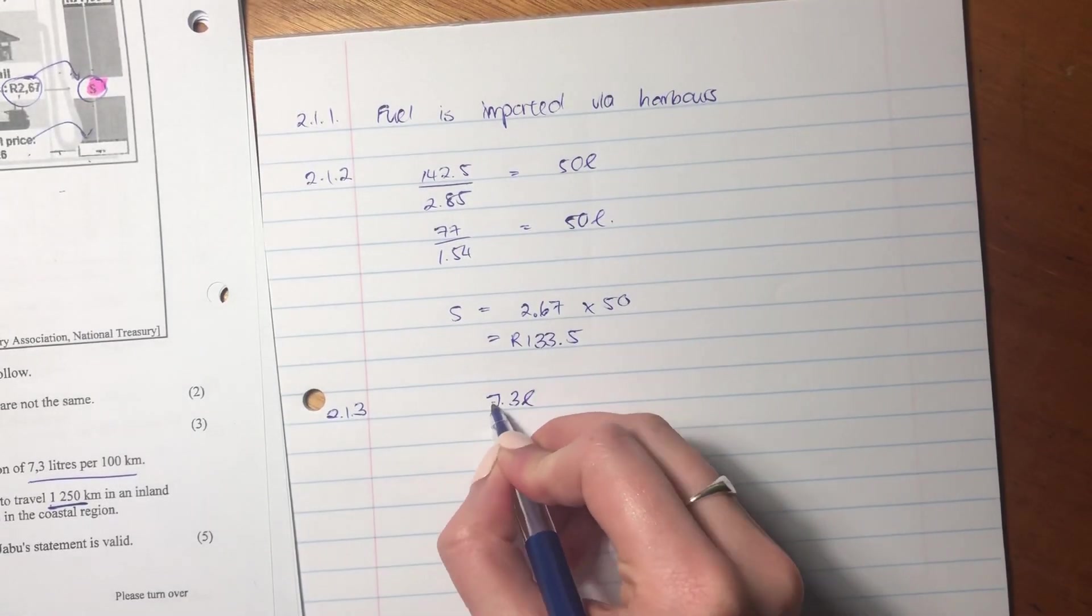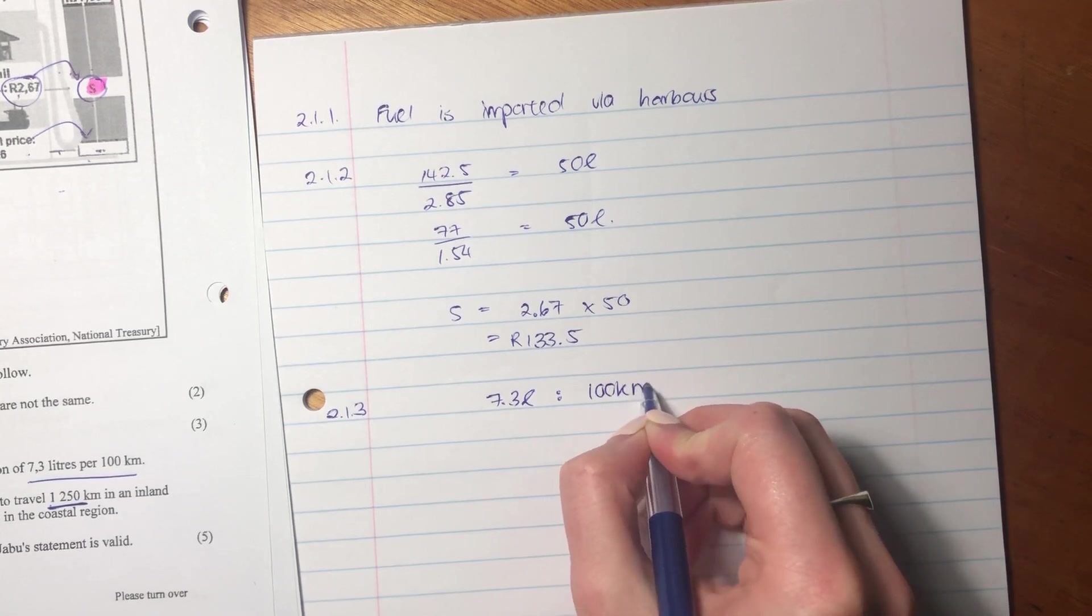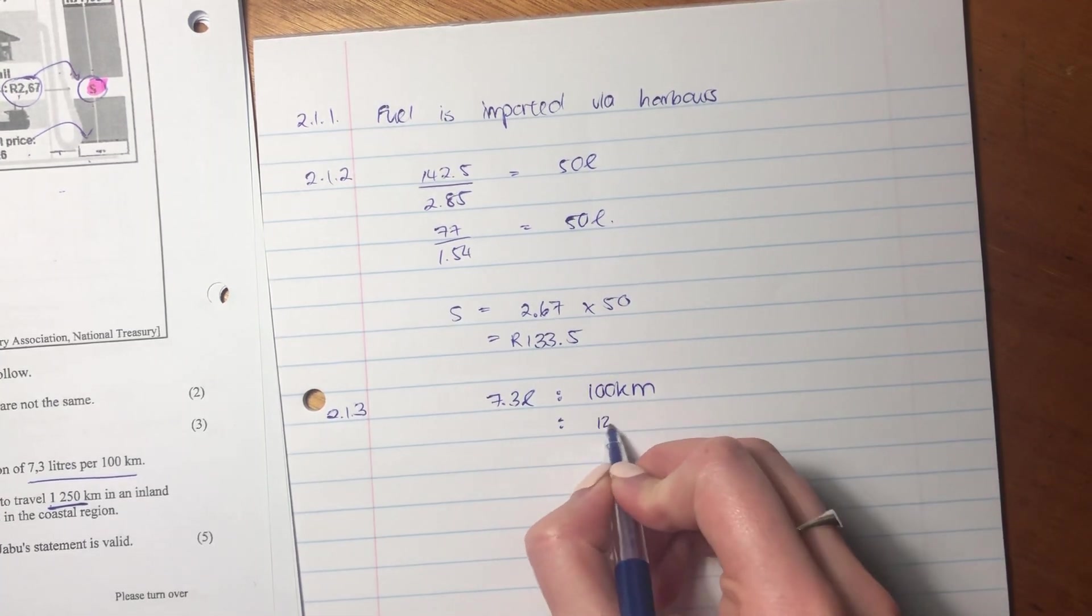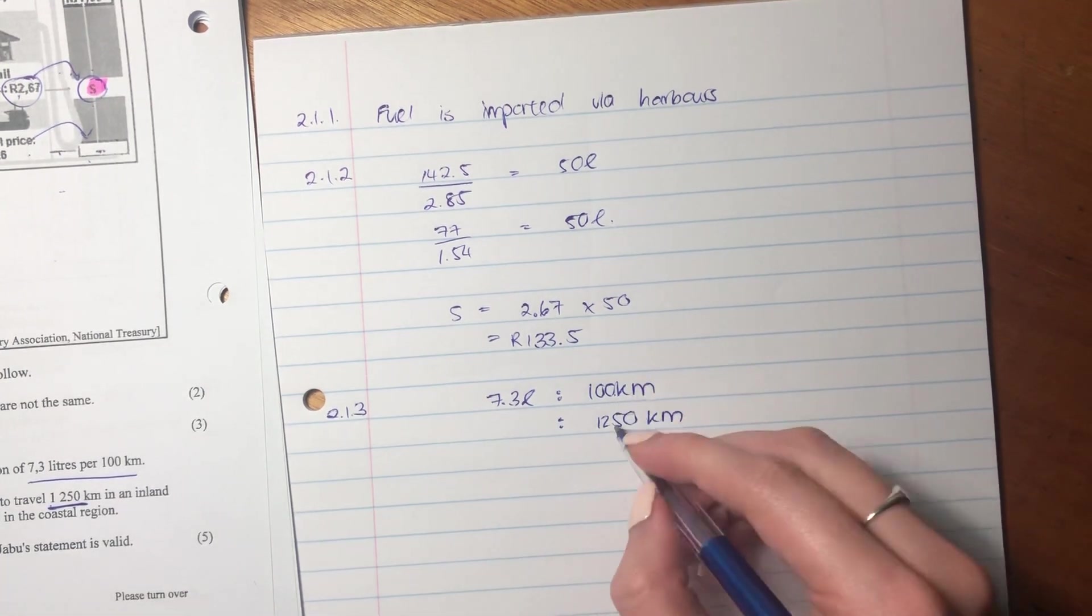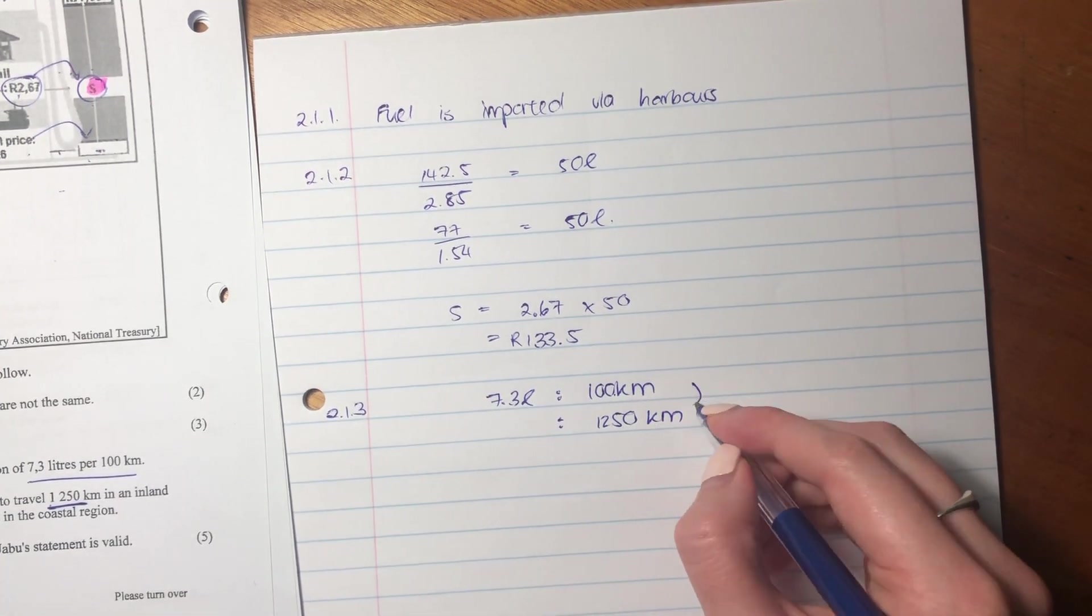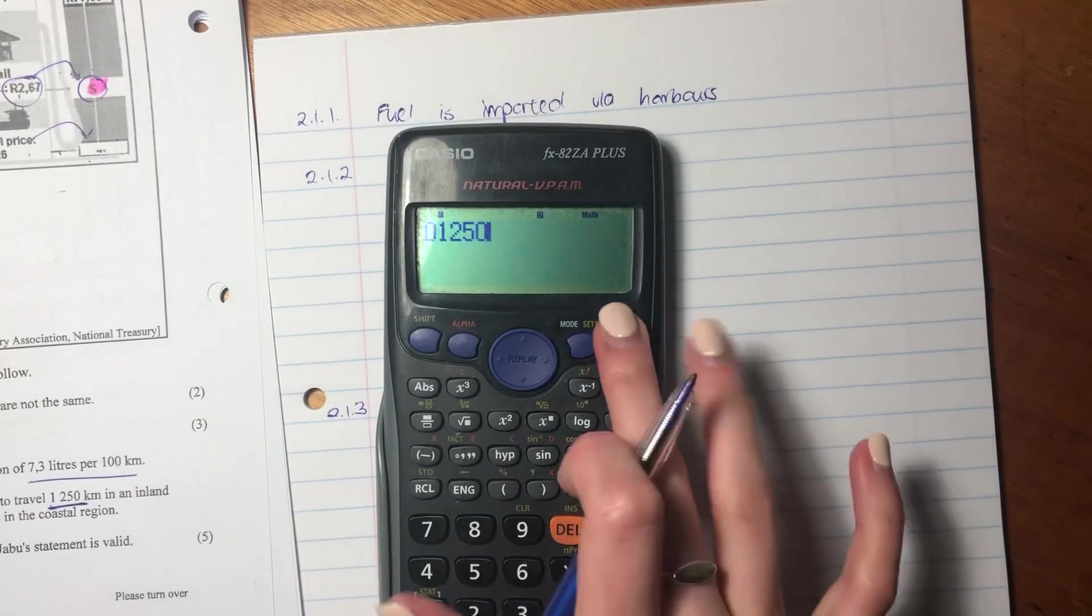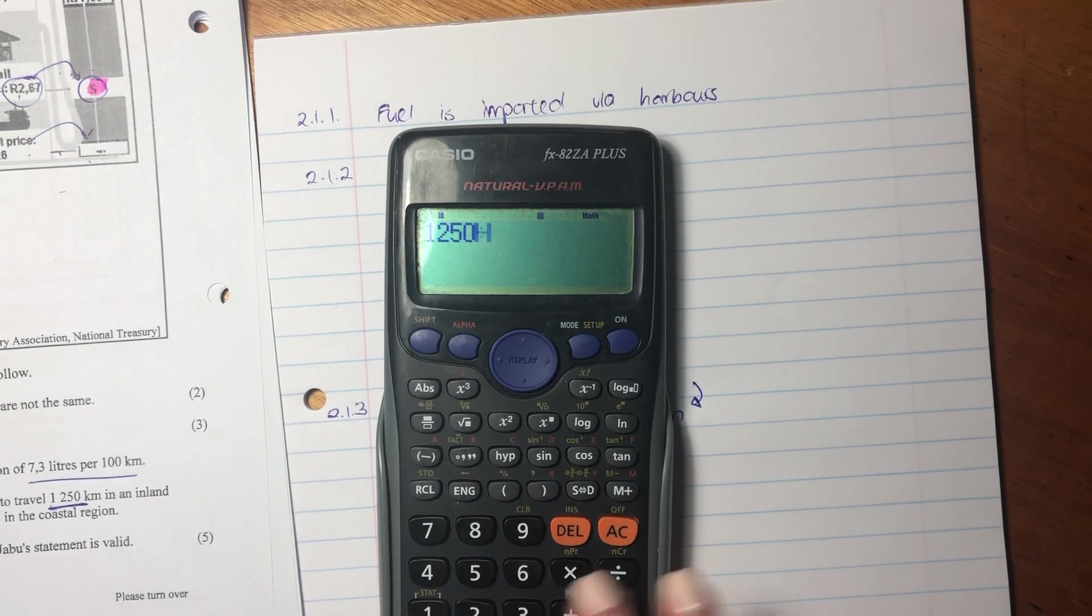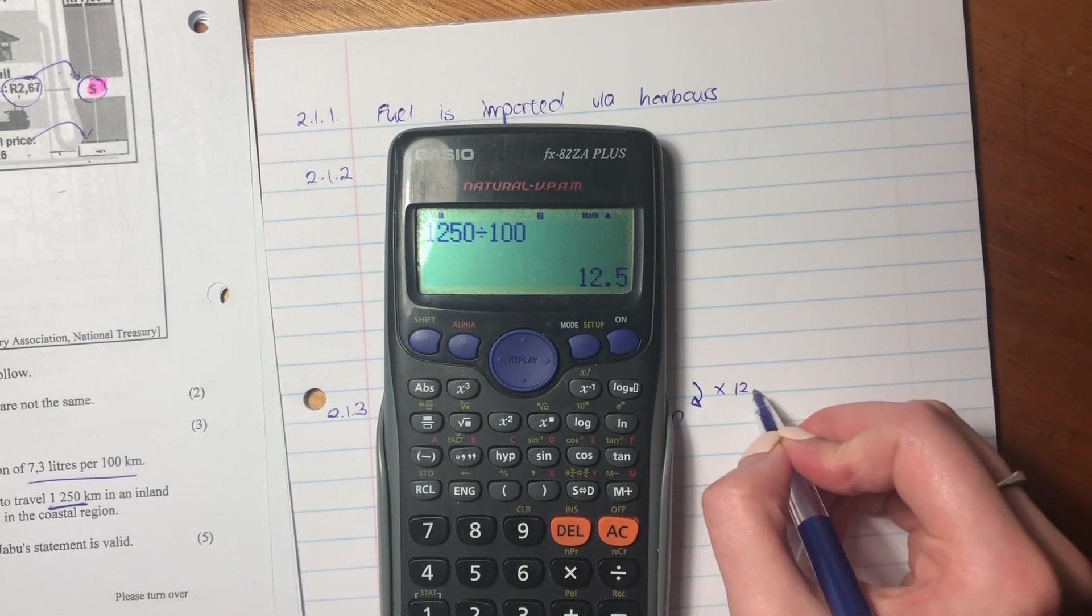So let's start with the ratio. So 7.3 liters gives her 100 kilometers in her car. But we know that she has to travel this many kilometers, so what do we have to do to the 100 to get to 1,250? The way we can figure that out is we have to multiply it by 12.5 to get from 100 to 1,250.